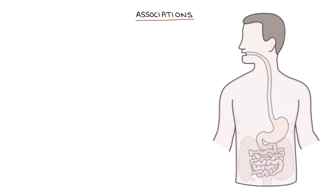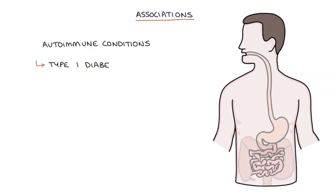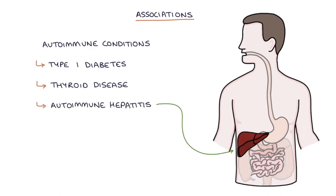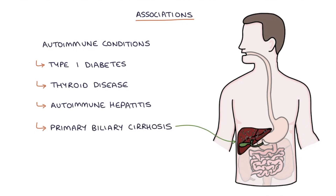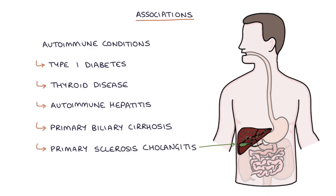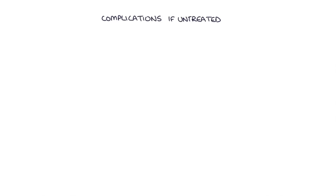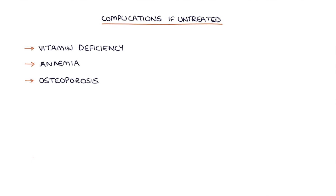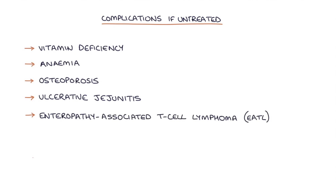There are several associations with celiac disease, all of which are autoimmune conditions: type 1 diabetes, thyroid disease, autoimmune hepatitis, primary biliary cirrhosis, and primary sclerosing cholangitis. Complications of untreated celiac disease include vitamin deficiency and anemia, osteoporosis, ulcerative jejunitis, and enteropathy-associated T-cell lymphoma (EATL) — a type of lymphoma of the intestine. It is also associated with non-Hodgkin's lymphoma and small bowel adenocarcinoma.